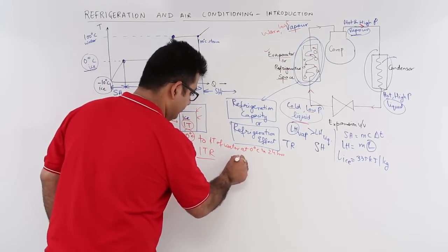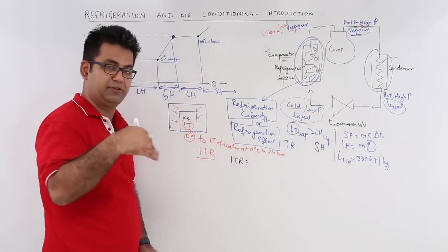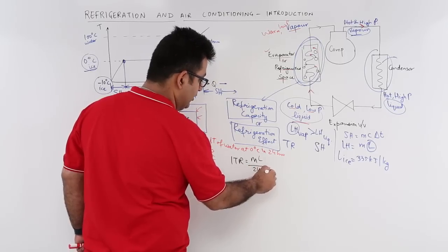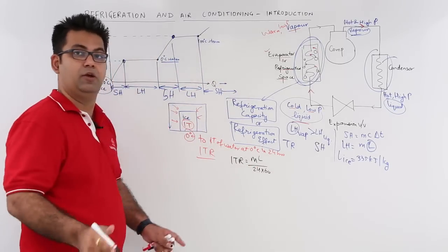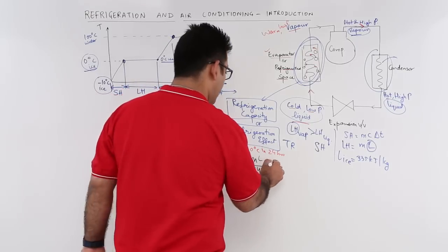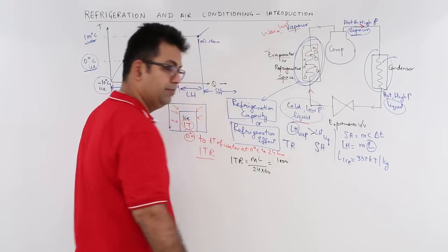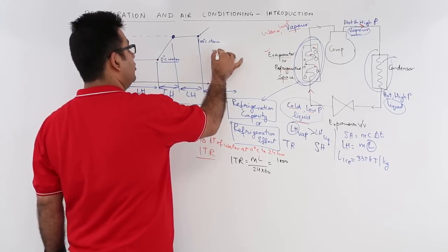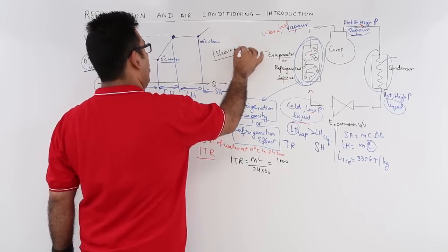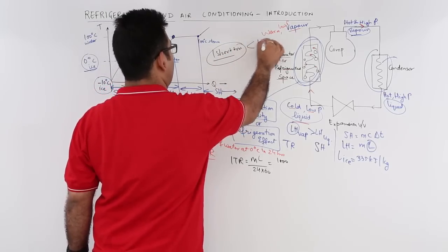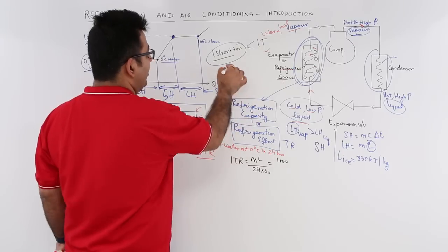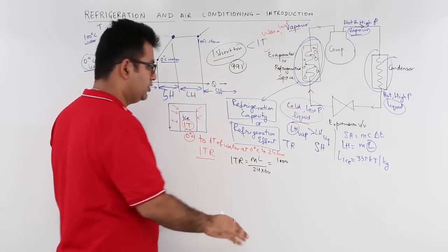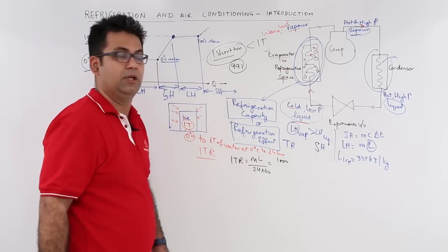1 TR is equal to the amount of heat extracted: M into L divided by 24 hours into 60, that is kilo joule per minute. So 1 TR = 1000 kg (1 ton) × 335 kJ/kg ÷ (24 × 60). This is hypothetical; in actual practice we use 1 short ton, which is less than 1000 kg. The exact value is around 991 kg, but for defining purposes we use 1 ton as 1000 kg.